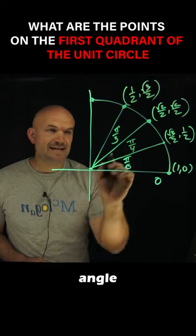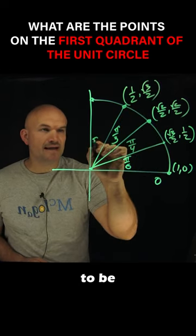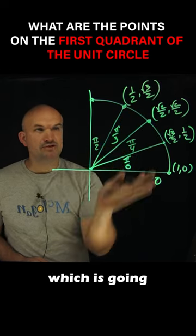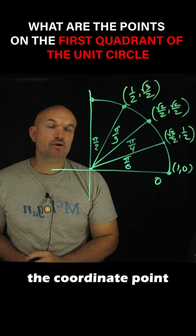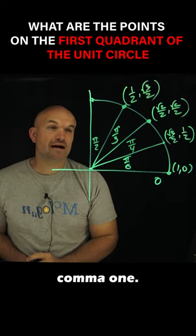And our last angle here is going to be π/2, which is going to be a quarter of a circle, and that's going to have the coordinate point (0, 1).